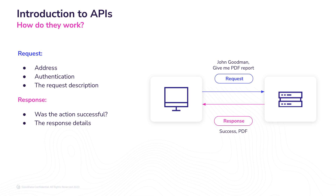Authentication is the process of verifying the identity and permissions of the user or application making the API request. It ensures that only authorized individuals or systems can access and interact with the API. Authentication mechanisms can include API keys, tokens, usernames, passwords, or other security measures to protect the API and its resources. The request description contains the necessary information sent to the API in order to perform a specific action or retrieve specific data, including any additional parameters needed to process the request.